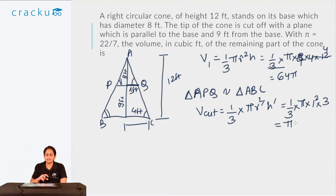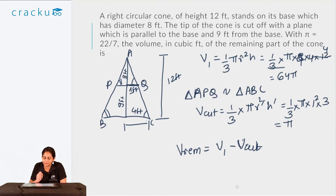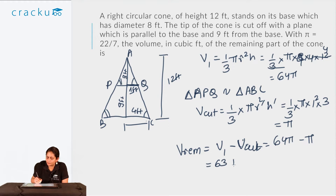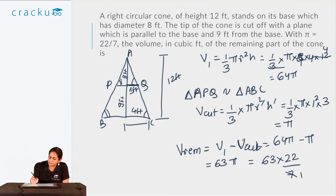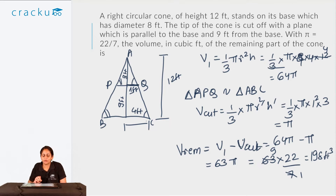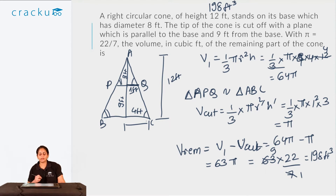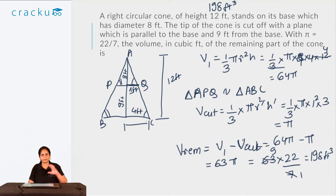The volume of the remaining part is V₁ minus the cut portion = 64π − π = 63π. With π = 22/7, we have 63 × 22/7 = 9 × 22 = 198 cubic feet. We found this by first finding the volume of the original cone, then the volume of the cut portion, and subtracting the cut portion from the original to get the volume of the remaining part.